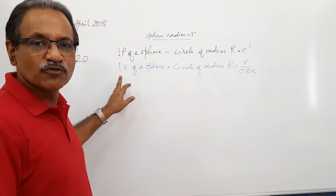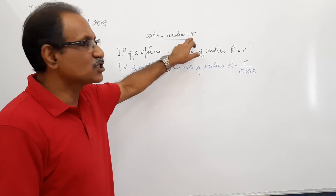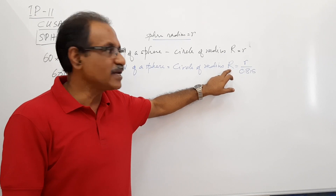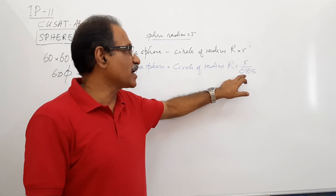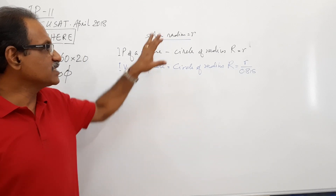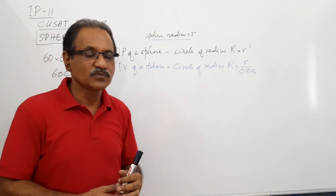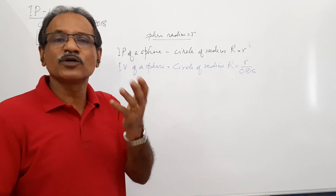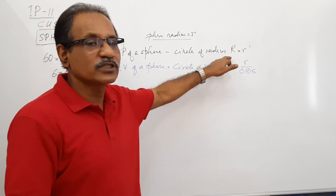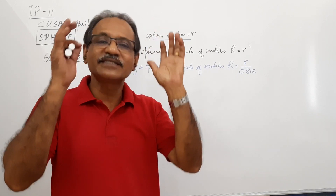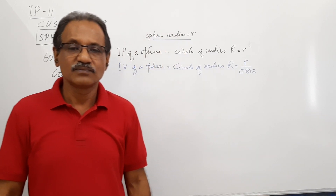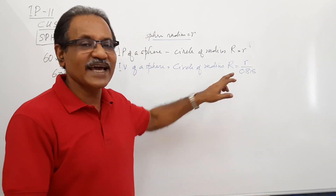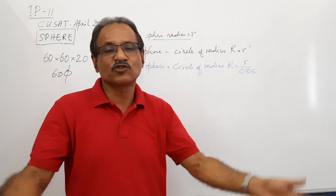Then, what about isoview? The isoview of a sphere of radius small r is a circle of radius capital R, where capital R equals small r divided by 0.825. This is extremely important. We have learned that isoprojection is smaller, but here the isoprojection of a ball is not smaller — it is the same diameter circle. And while isoview is normally actual size, here the isoview is bigger than actual size.